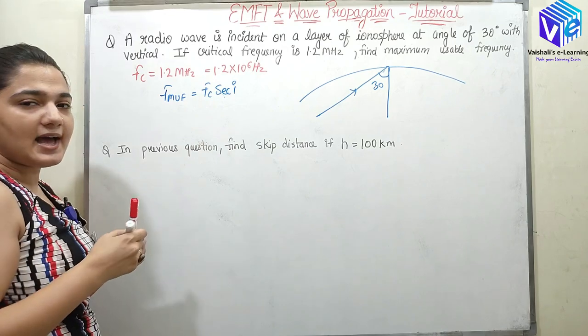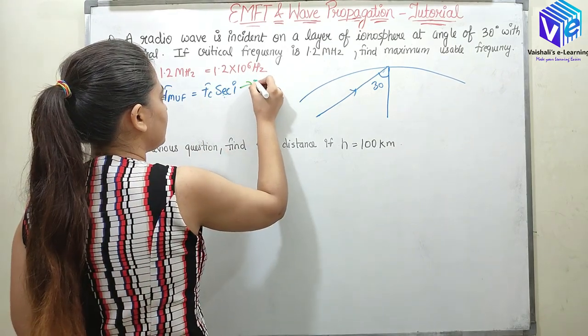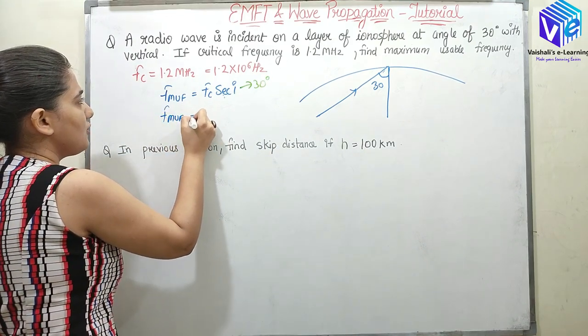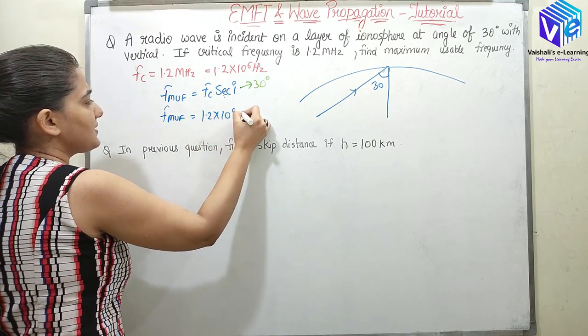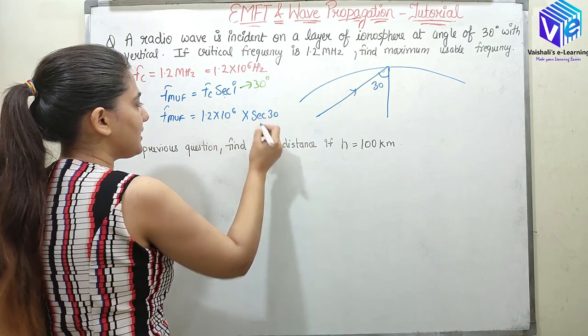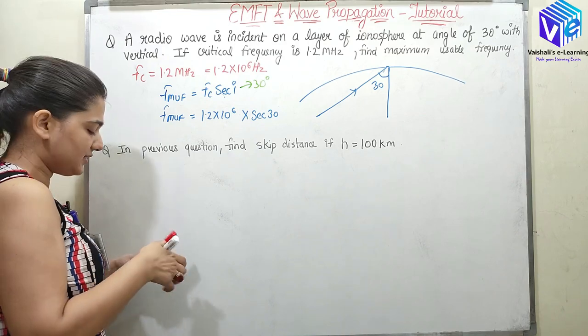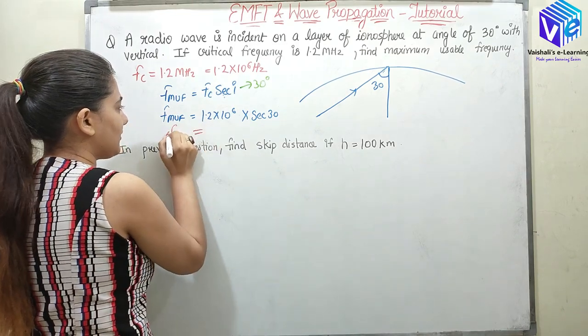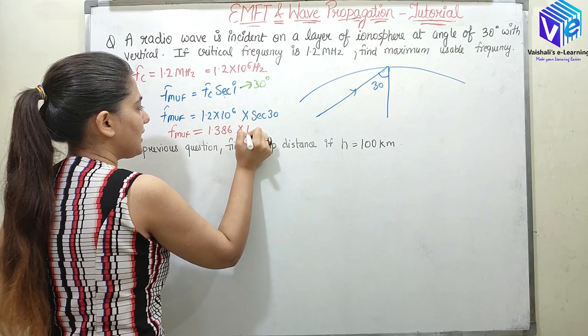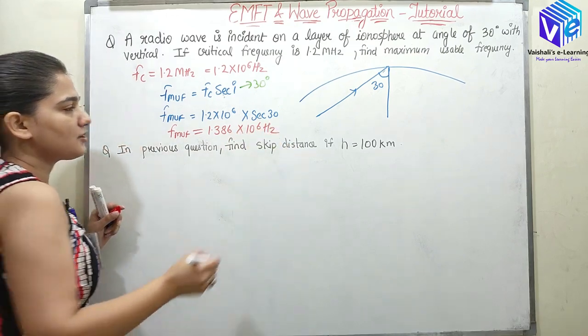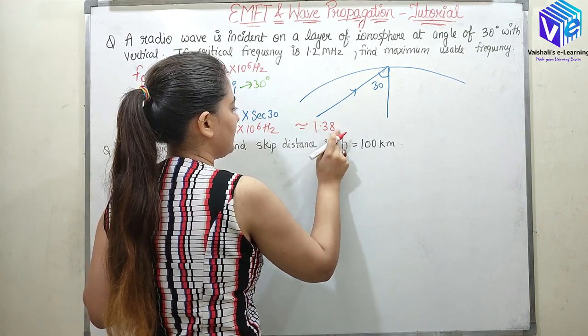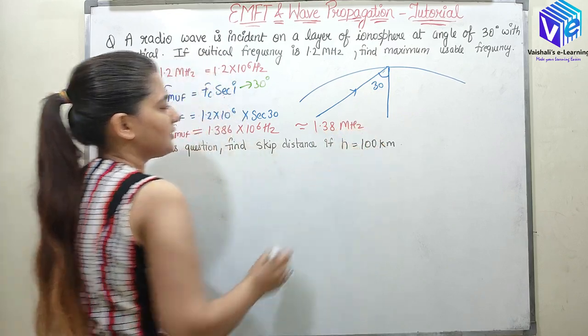Now what is I? I is given as 30 degrees. Fc is also given. So Fmuf will be equal to 1.2 × 10^6 × sec(30). We know the secant value. You can find out the value of sec(30) and you can find out Fmuf. So Fmuf will come out to be 1.386 × 10^6 hertz. It is nearly equal to 1.386, we will take 1.38 megahertz.